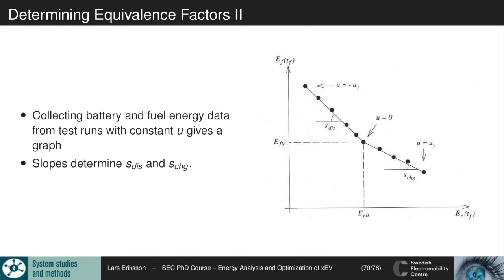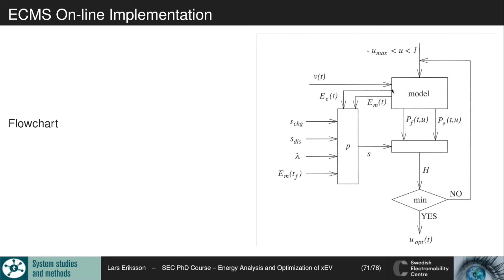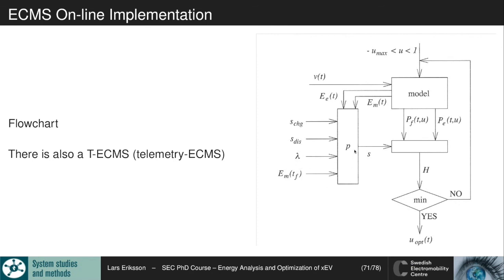I did this the other way around in my lecture — I showed you the theory and then came to how it was applied originally. The equivalence in ECMS comes from trying to evaluate the value of electricity in terms of fuel cost, to balance the two against each other. The implementation uses your vehicle model, your lambdas, and your equivalence factor s; you look at whether the Hamiltonian is at its minimum and if so you have your optimal control signal, otherwise you iterate again. There is also a telemetry ECMS described in the book, where map data is added so that s becomes adjusted in relation to future driving.